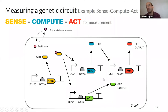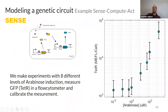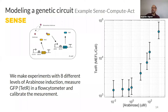GFP and theta will presumably be expressed at the same level because they have the same construct upstream — the same promoter and RBS. So we can use GFP as a proxy for theta: whatever changes in GFP will be the same changes that occur in theta. This gives us information about the intermediate theta node in our circuit.